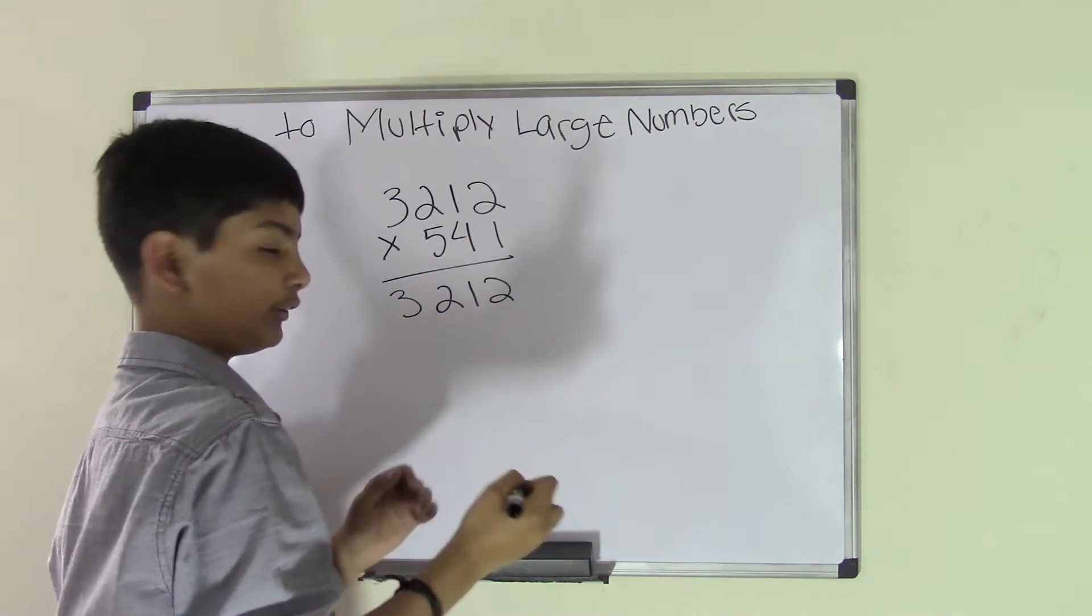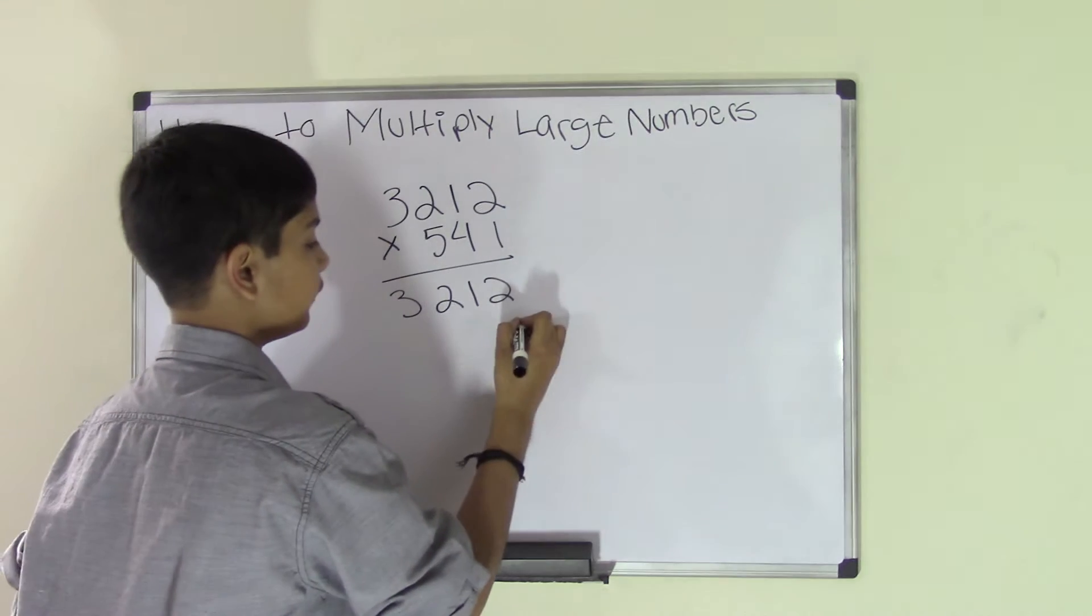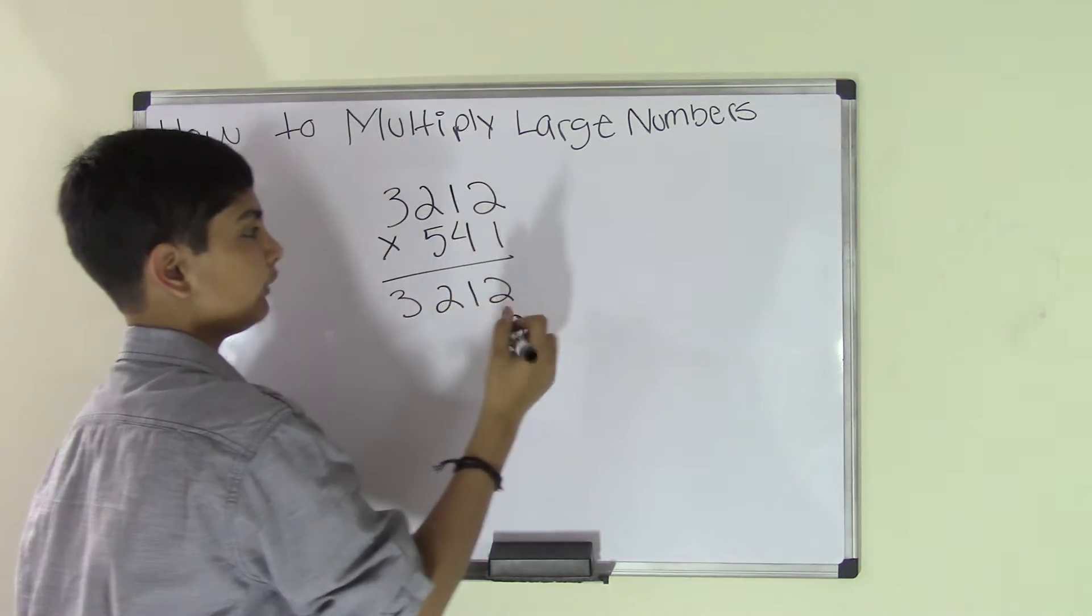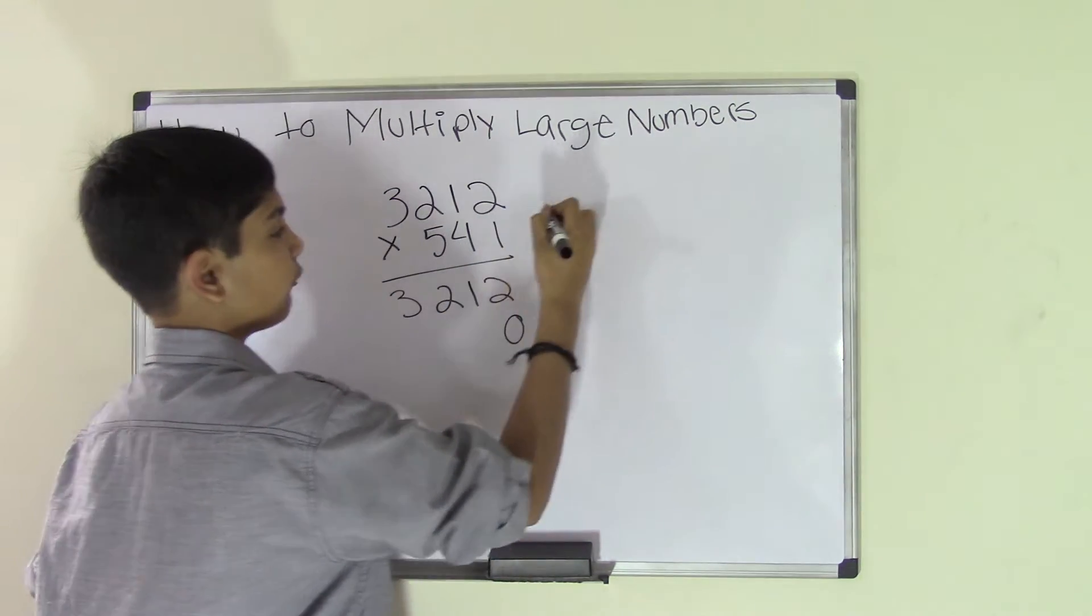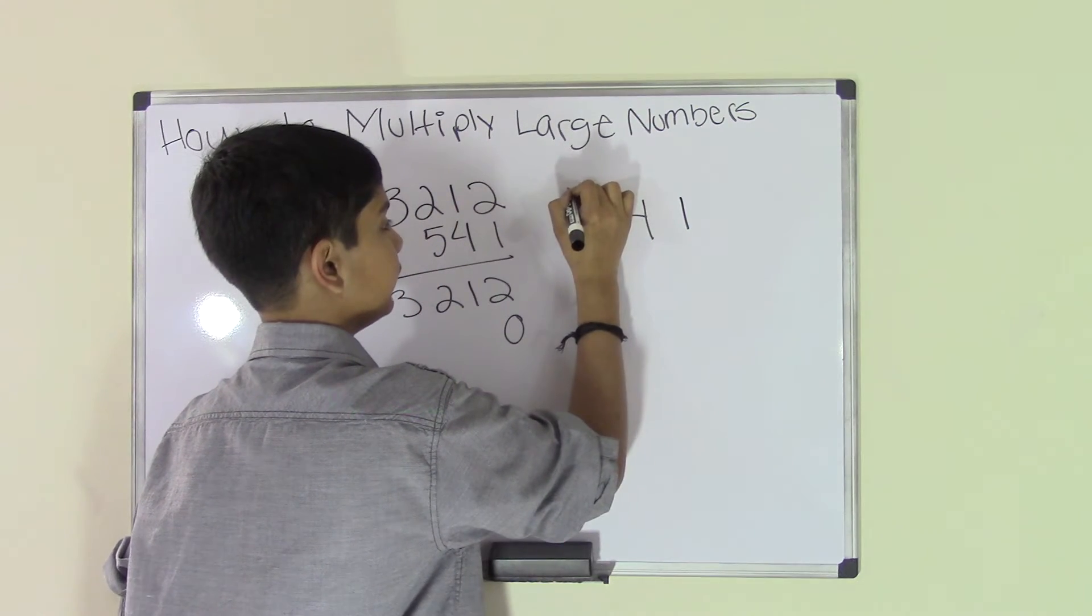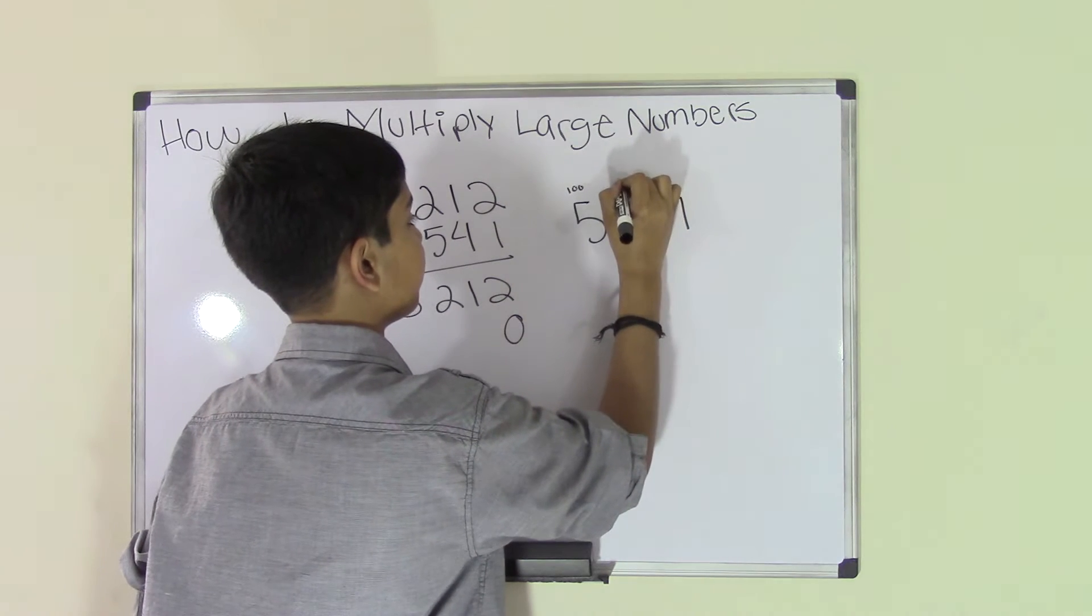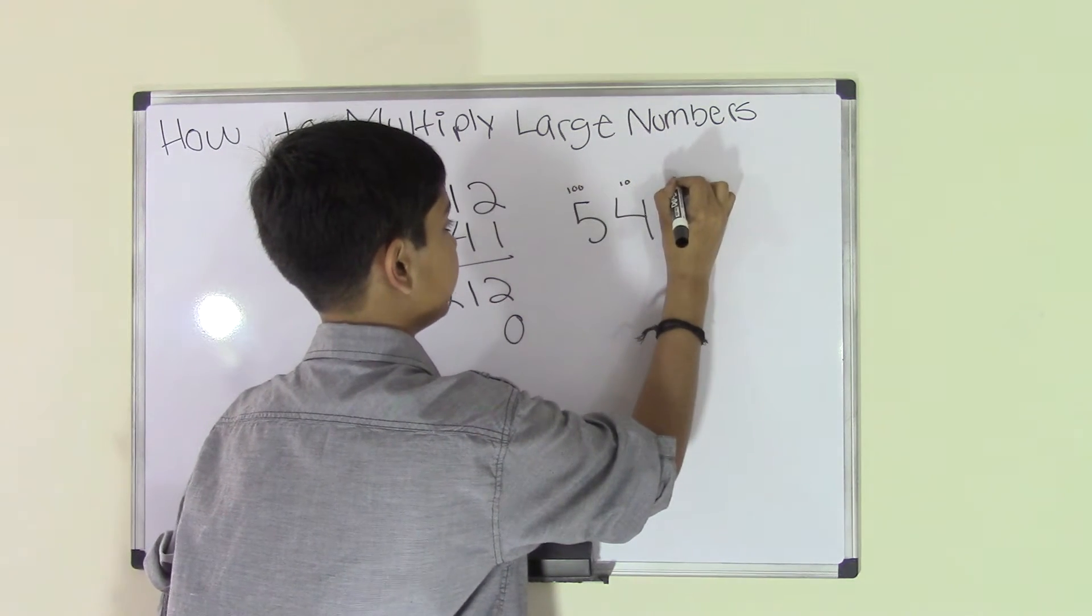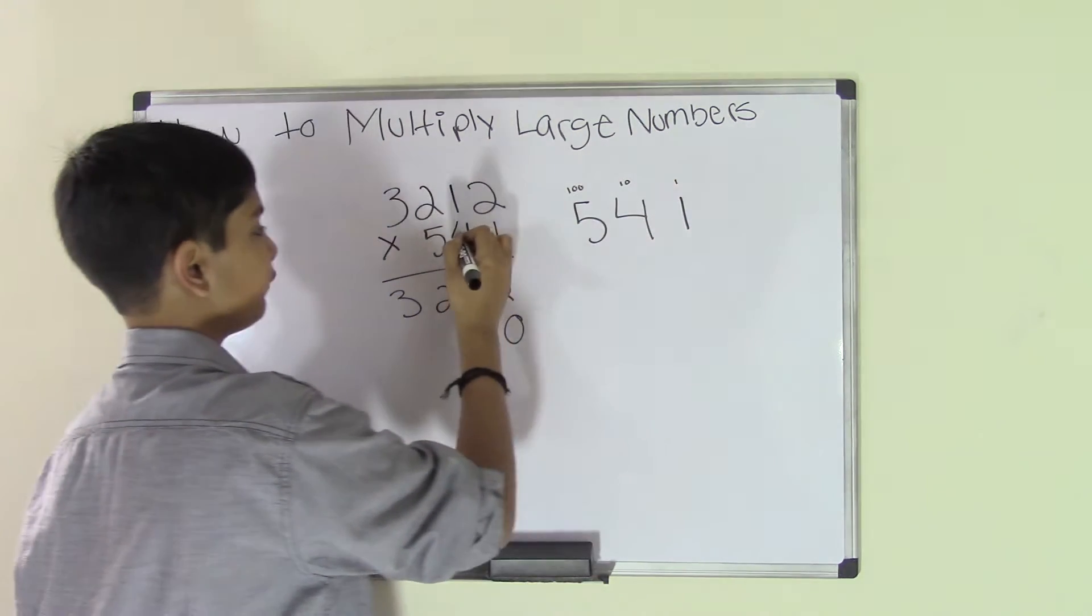Before we do, we have to add a zero over here. Why do we add zero? Because since we're doing 541 times the number on top, we know that 5 is in the hundreds, 4 is in the tens, and 1 is in the ones. Since we're moving on to the 4, and the tens place has zero in terms of it.